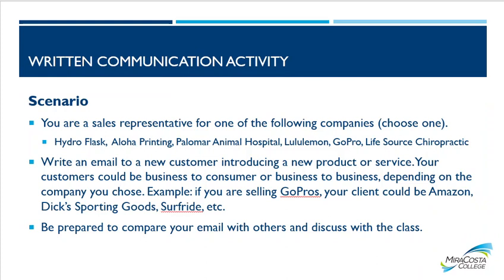Here's a written communication activity you can do on your own — you don't have to turn this in, but it's good practice. The scenario: you're a sales rep for one of the following companies — Hydro Flask, Aloha Printing, Palmer Animal Hospital, Lululemon, GoPro, or LifeSource Chiropractic, some random local North County businesses. Write an email to a new customer introducing a new product or service. Your customers could be business-to-consumer or business-to-business depending on the company you choose. For example, if you're selling GoPros, your client could be Amazon, Dick's Sporting Goods, or Surf Ride.